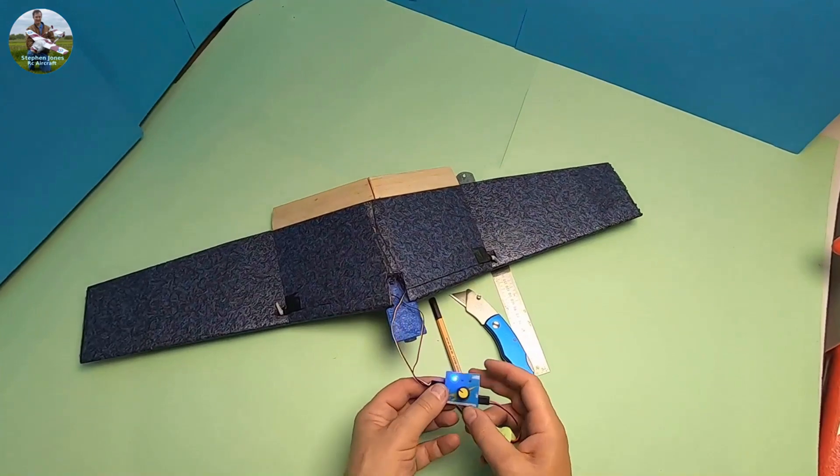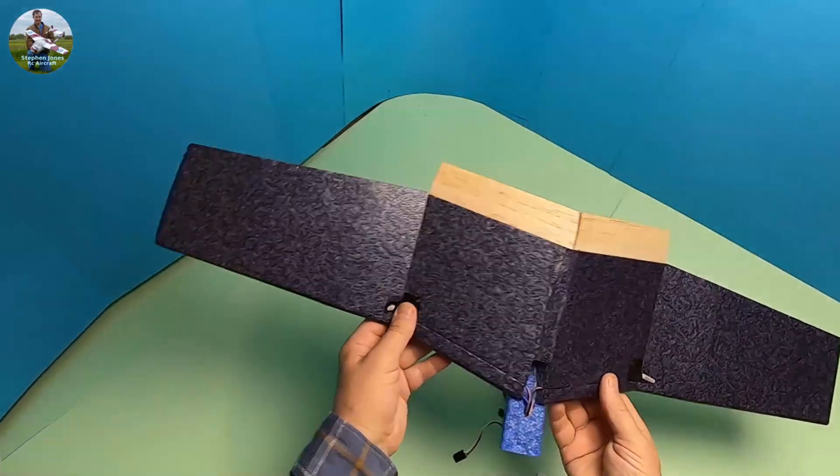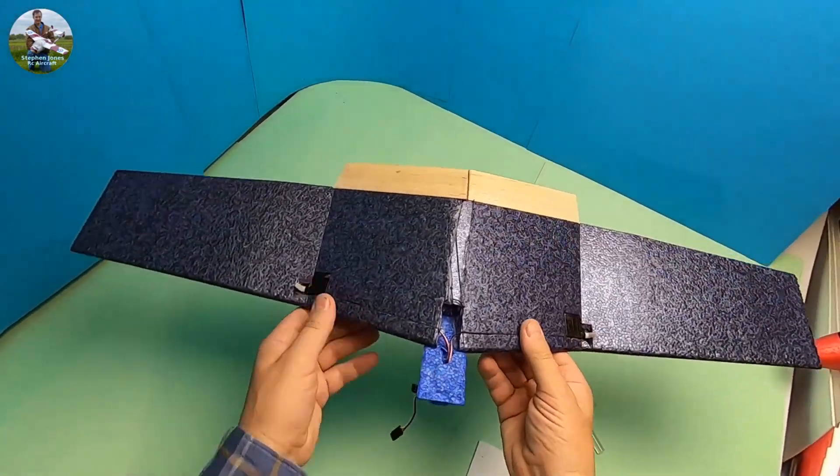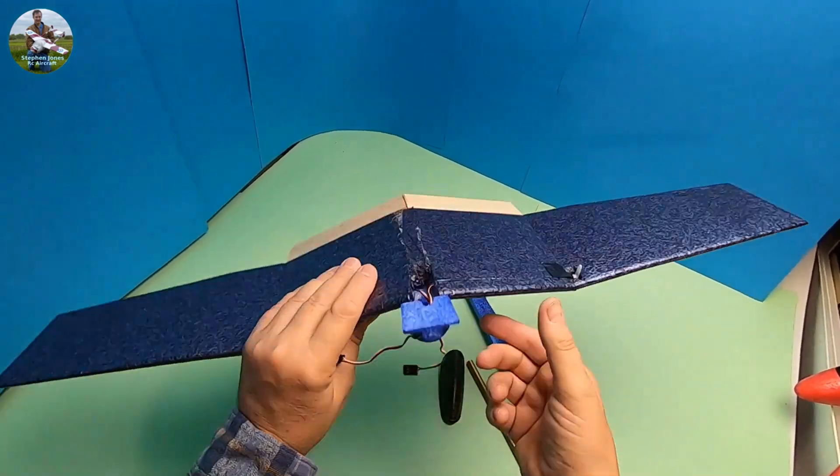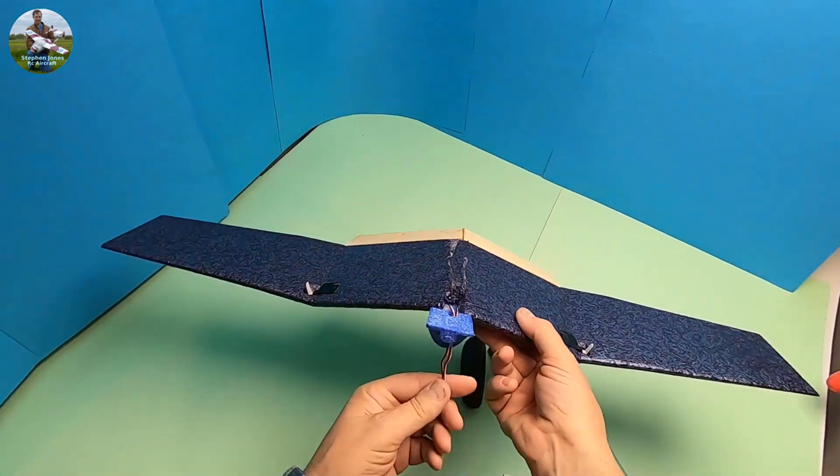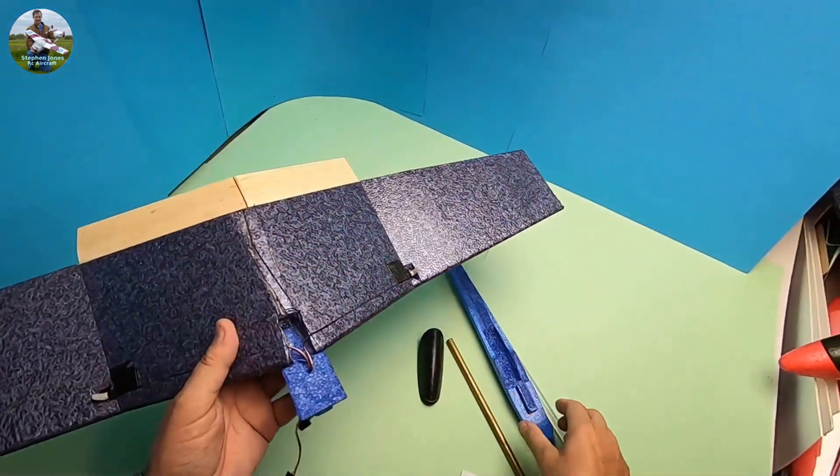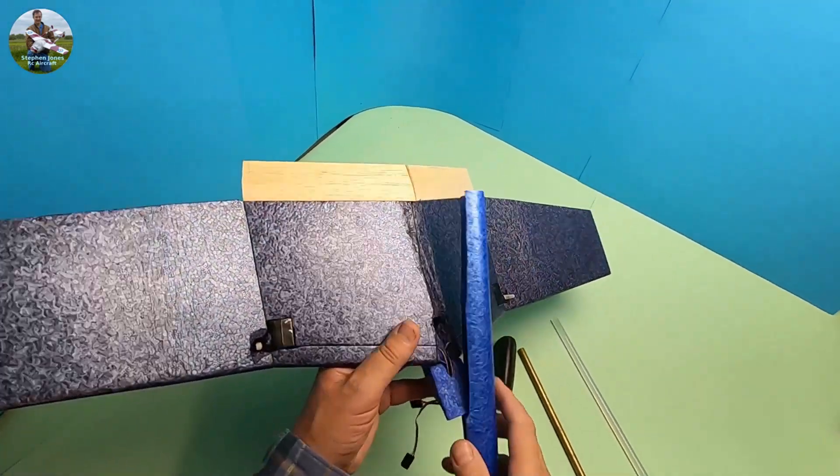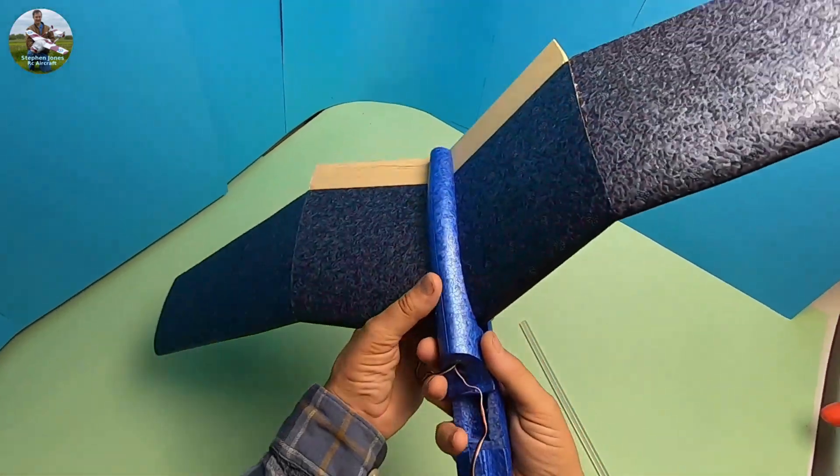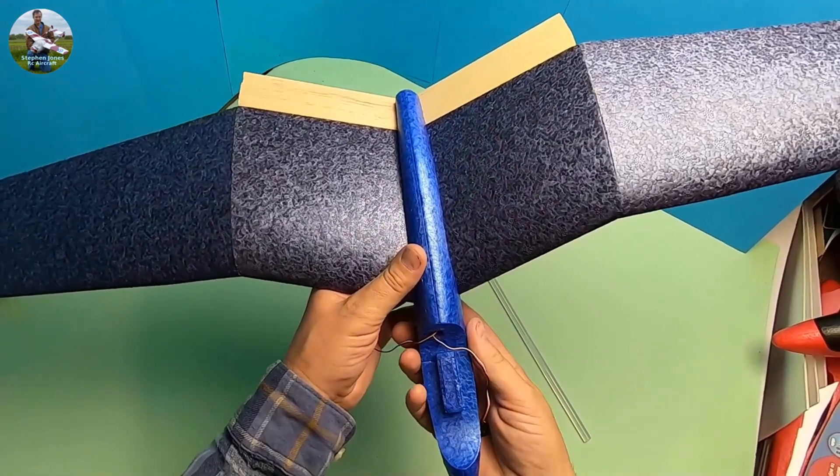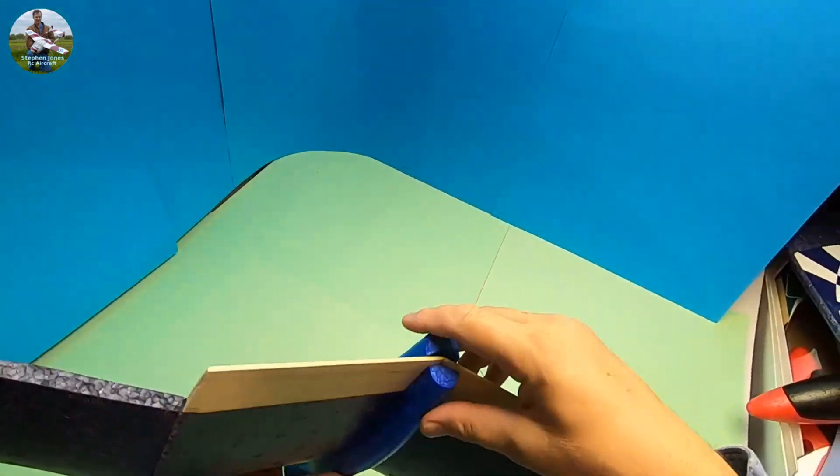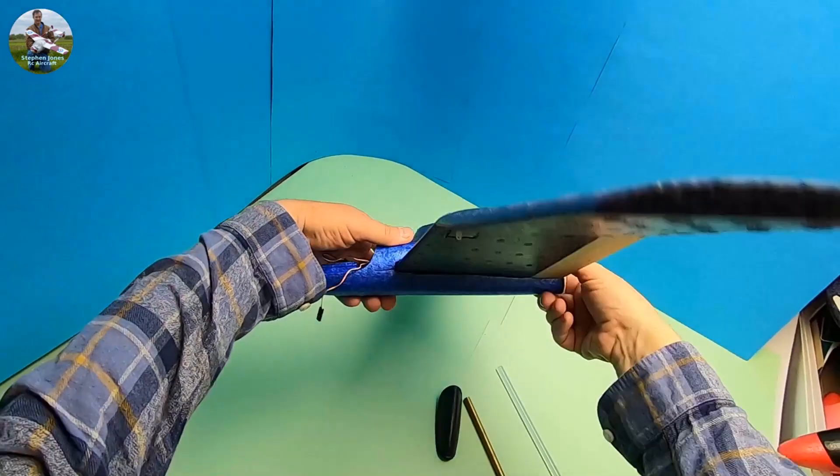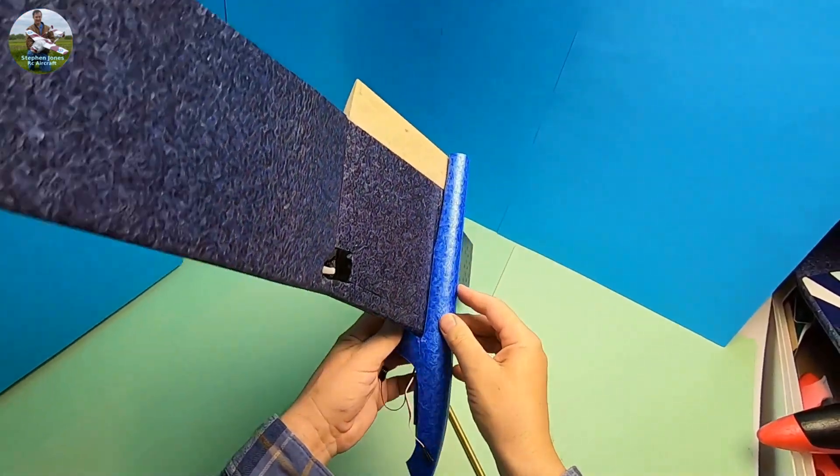I shall carry on with the rest of the build. So now the servos are glued into place. I've made a small hole through that section there just to get my wires through temporarily while I glue the bottom bit on. So now I can use the front part. I've got it lined up like that. It's just a case of hot melt glue the bottom on.